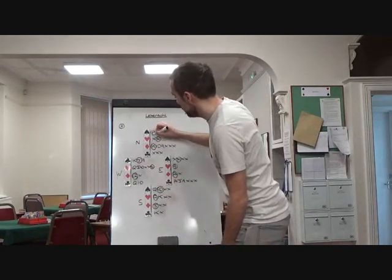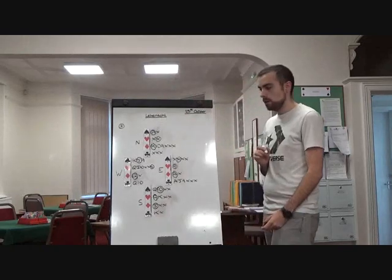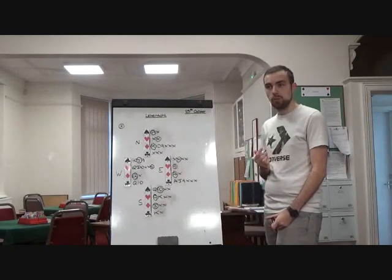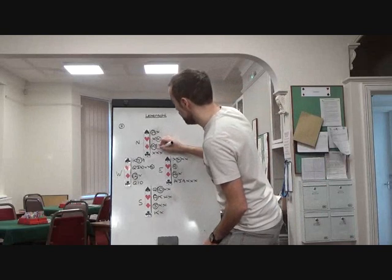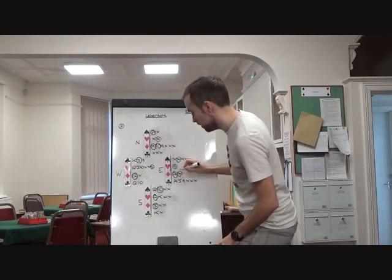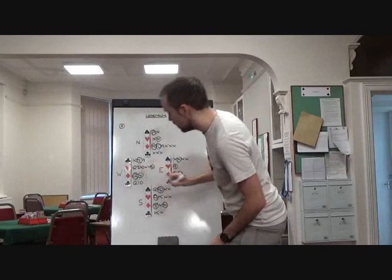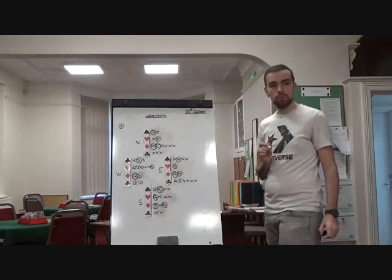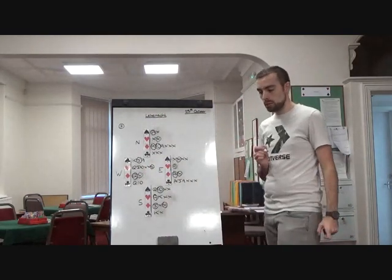They cover with the jack. You win your ace. Now you make it a point to draw another round of trumps. Ten of diamonds. Fortunately for us, the diamonds are two-two.